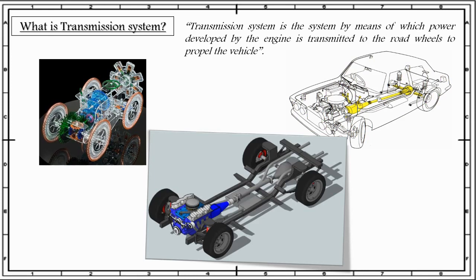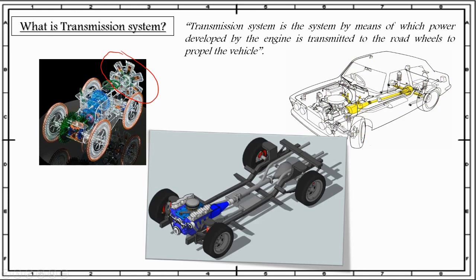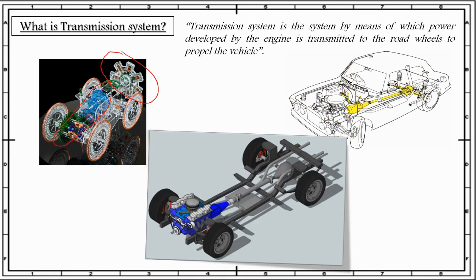As we can see in the figure, the power developed by this engine is transferred to the rear wheel of the vehicle by means of the transmission system. I hope you now have a clear idea about the transmission system. Now let us discuss what are the essential components or elements of the transmission system.